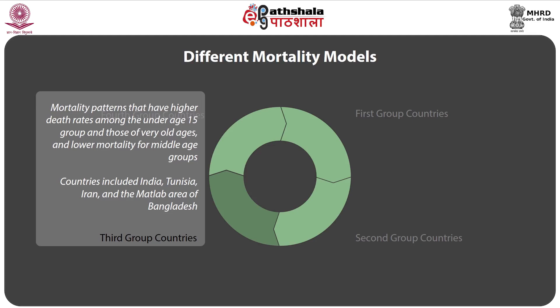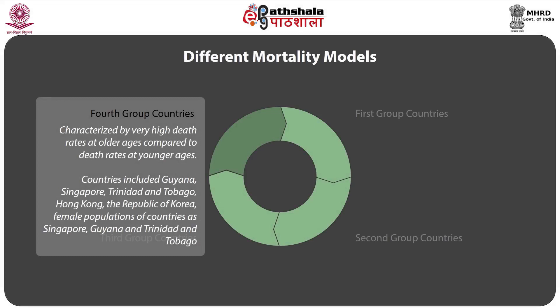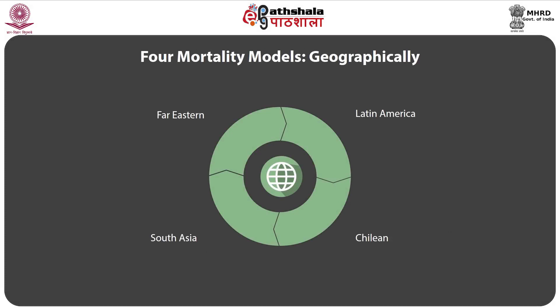The fourth group includes male populations of Guinea, Singapore, Trinidad and Tobago, Hong Kong, and the Republic of Korea, as well as female populations of Singapore, Guinea, and Trinidad and Tobago. This group is characterized by very high death rates at old age compared to death rates at younger ages. Based on data from these four groups, life tables were constructed corresponding to four mortality models identified geographically as Latin America, Chilean, South Asia, and Far East patterns.